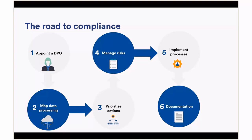The appointment of a data protection officer doesn't apply to all organizations, but when looking specifically at local government, there are conditions listed under Article 37 of GDPR that make specific reference to public authority — if processing is carried out by a public authority or body, or if the core activities require regular and systematic monitoring of data subjects on a large scale. Within a public space control room, both of those references apply, so you would need to appoint a data protection officer.